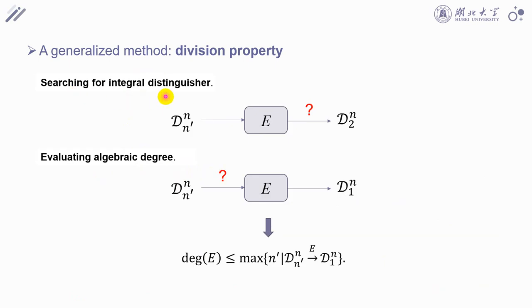In the application of DP to search for integral distinguishes, we usually fix the input DP of cipher E and to judge whether the minimum of the output division property is no more than one or not.